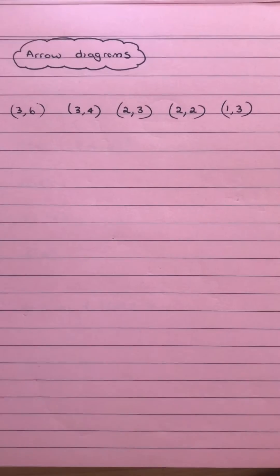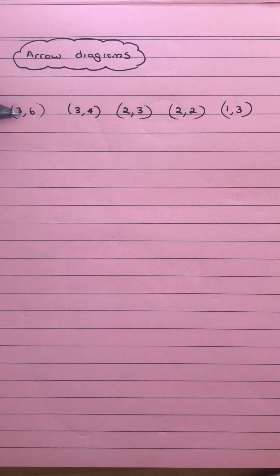Having a look at how to draw an arrow diagram. Basically we write all our x values on one side and our y values on the other. Looking at the x's we've got 3, 2 and 1.